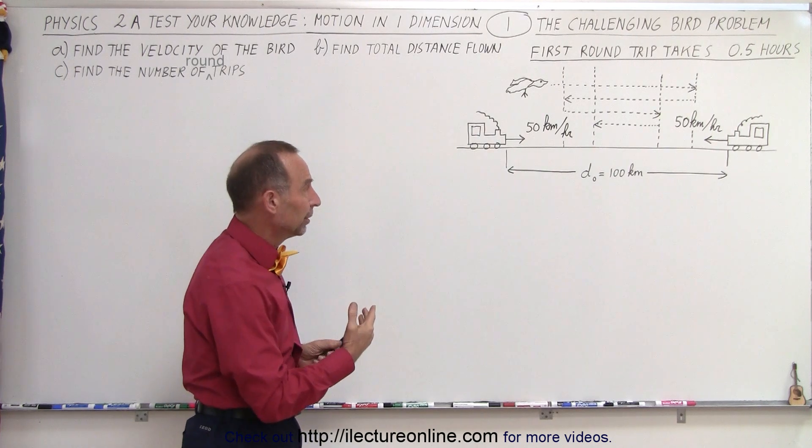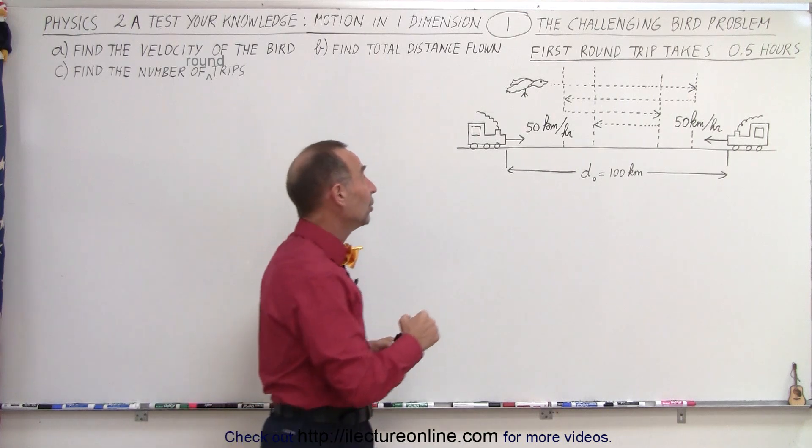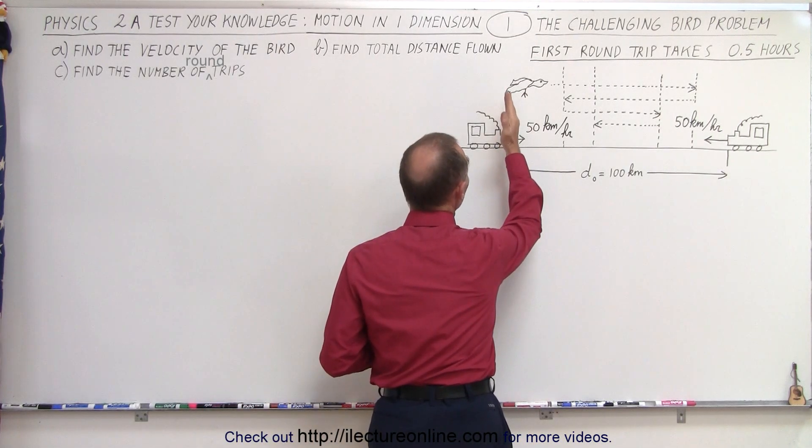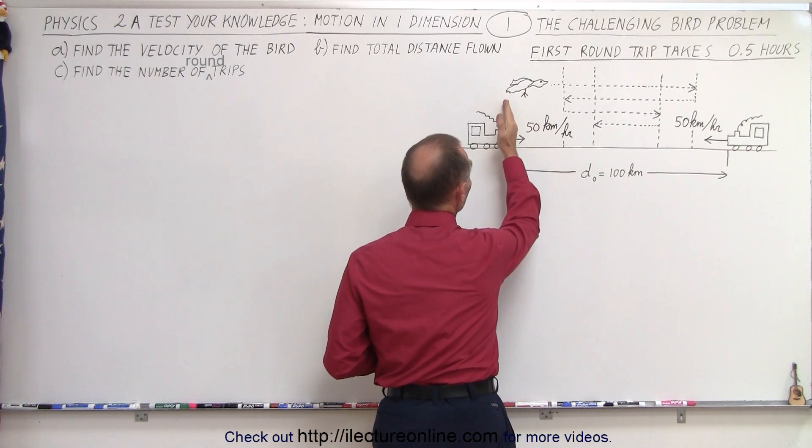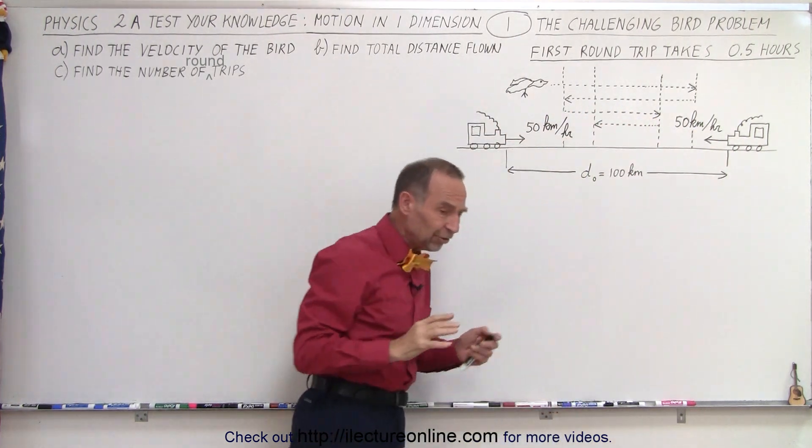Let's say that we have a bird, kind of a super bird, that can fly very fast, and the bird at time equals zero will begin to fly from the position of the first train on the left here towards the train on the other side.